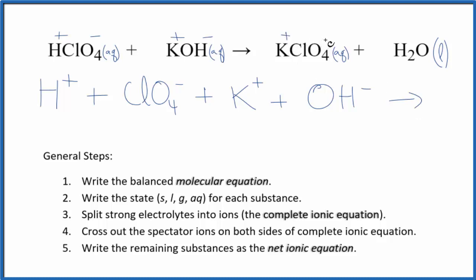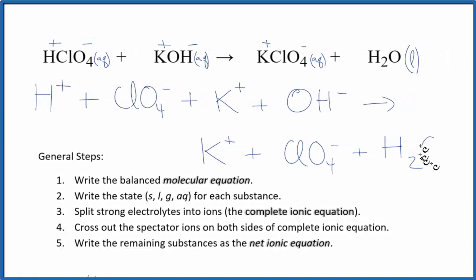On the product side, we have K plus, that's our potassium ion, plus our perchlorate ion. And then water, that's a liquid. We don't split liquids apart in net ionic equations. So this is our complete ionic equation, sometimes called the total ionic equation.